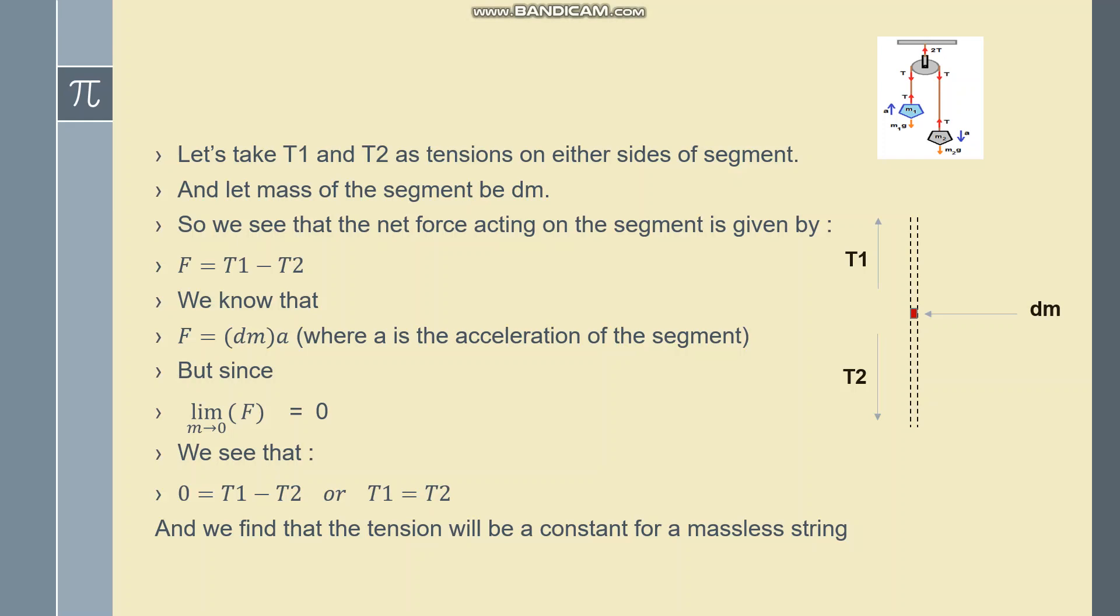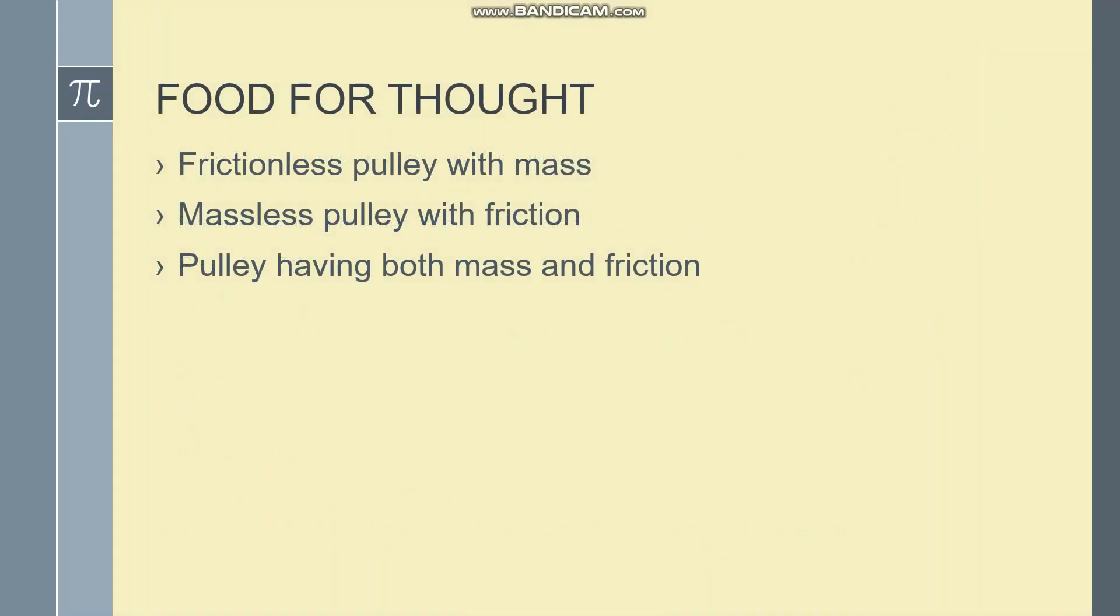So I will leave you with few questions today. You have to think about each of these three different cases. The first one, the pulley is frictionless but it has a mass. In the second case, the pulley has friction but no mass. And the third case, the pulley has both mass and friction.